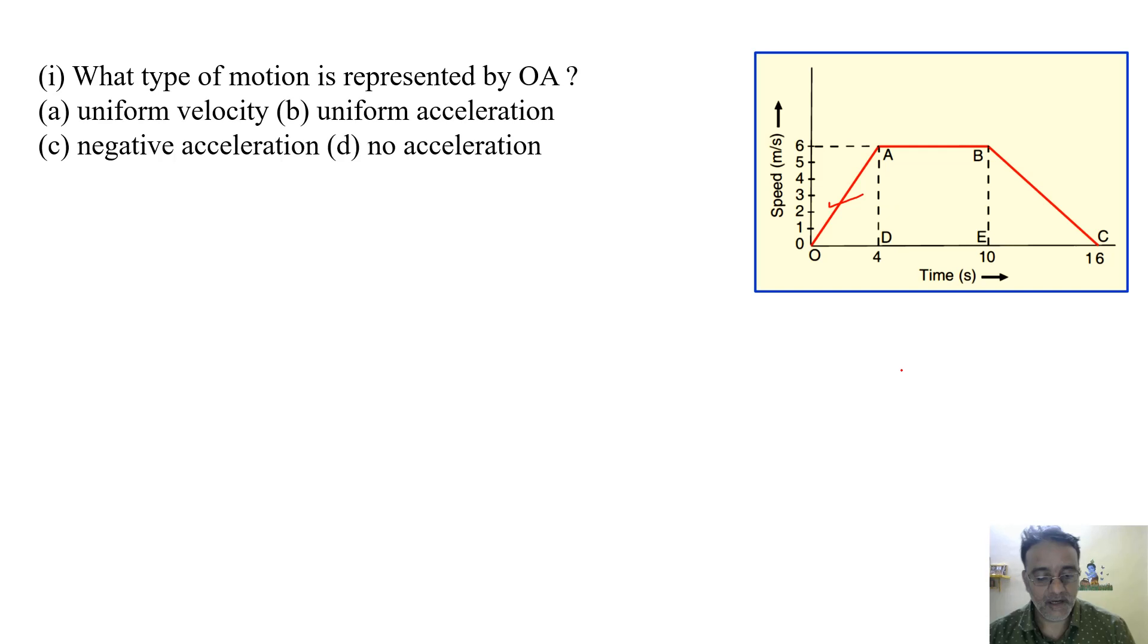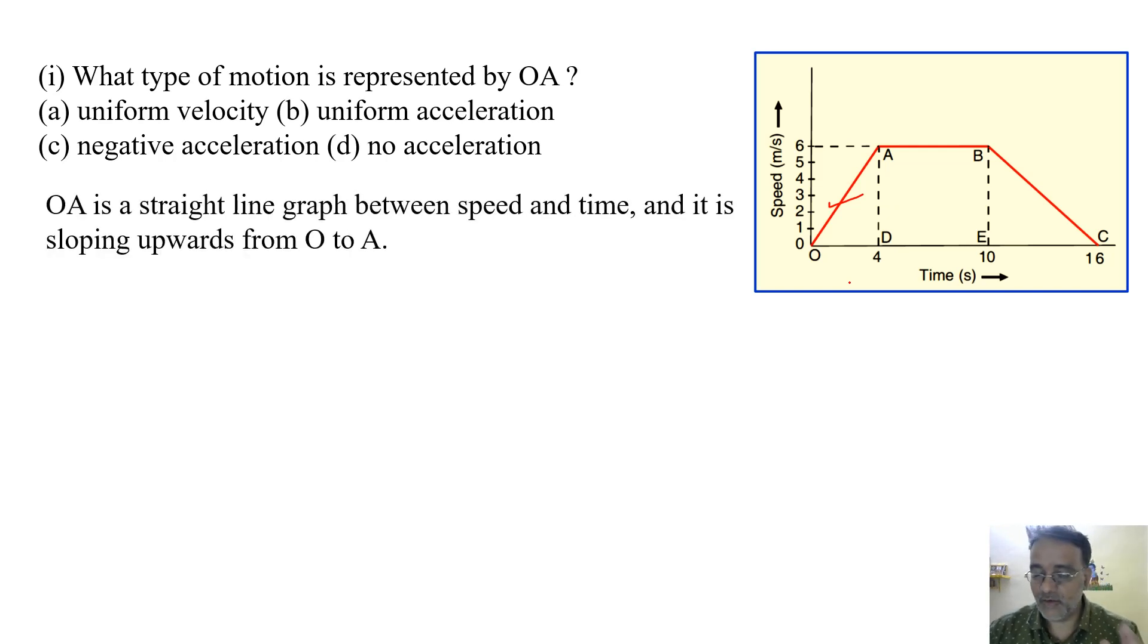So OA is a straight line graph between speed and time, and it is sloping upward. Upward means badh raha hai. Therefore, the graph OA represents uniform acceleration. So the correct option is B.